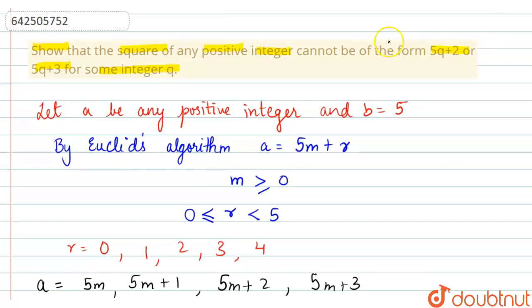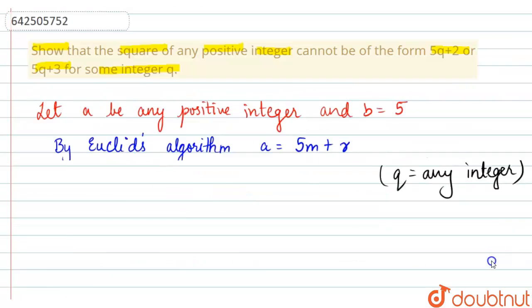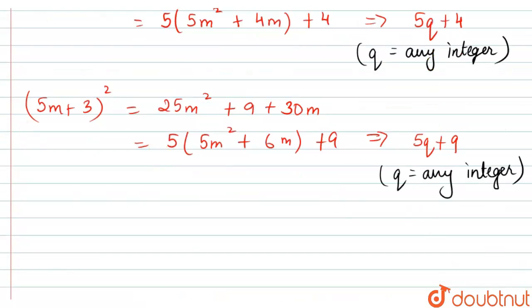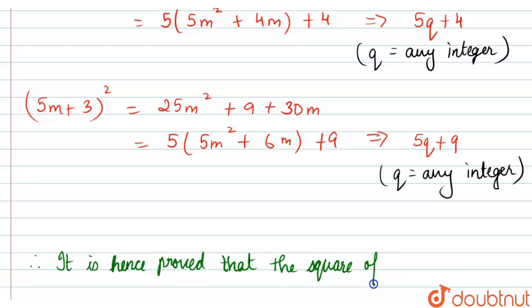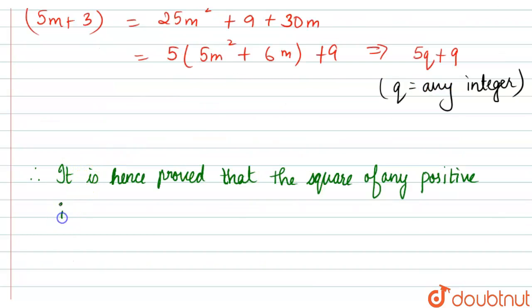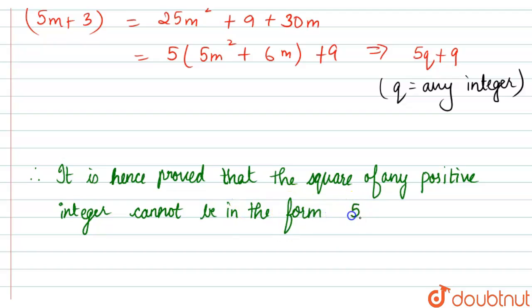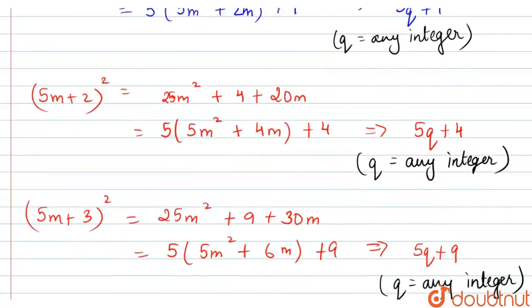As was asked in the question, we had to show that the square of any positive integer cannot be in the form of 5q plus 2 or 5q plus 3. Therefore, it is hence proved that the square of any positive integer cannot be in the form 5q plus 2 or 5q plus 3, because it is in the form of 5q, 5q plus 1, 5q plus 4, or 5q plus 9.